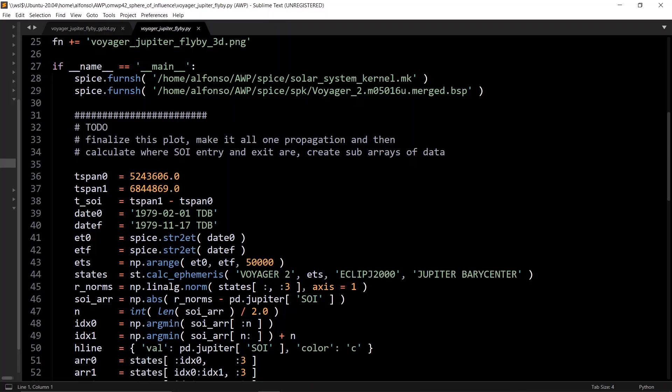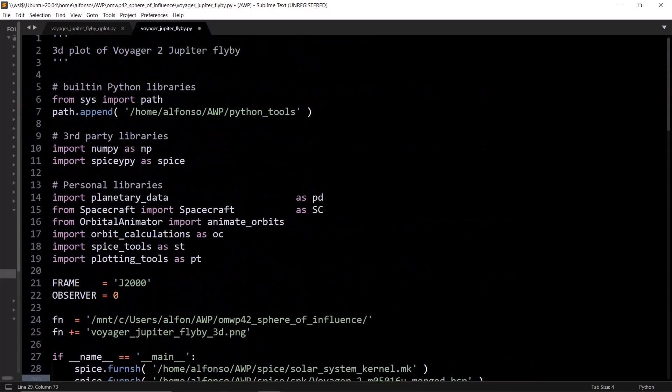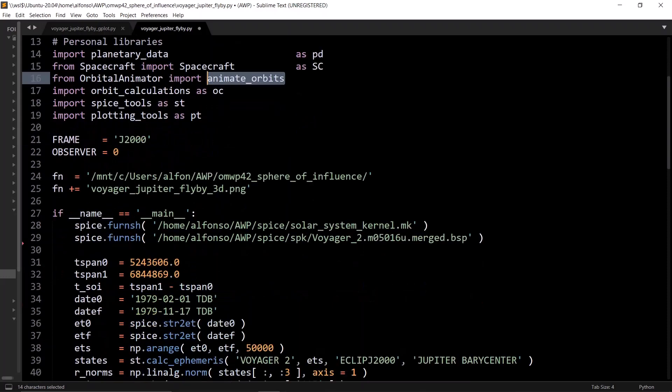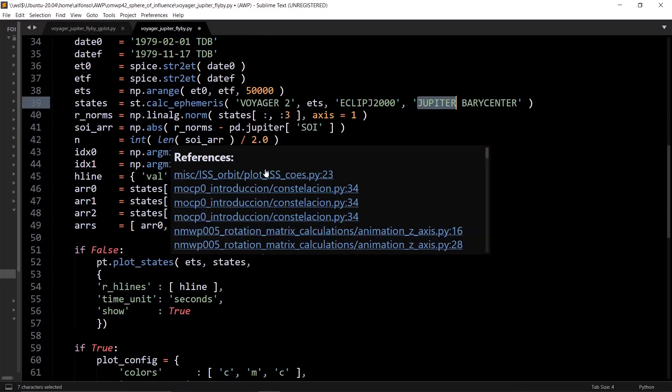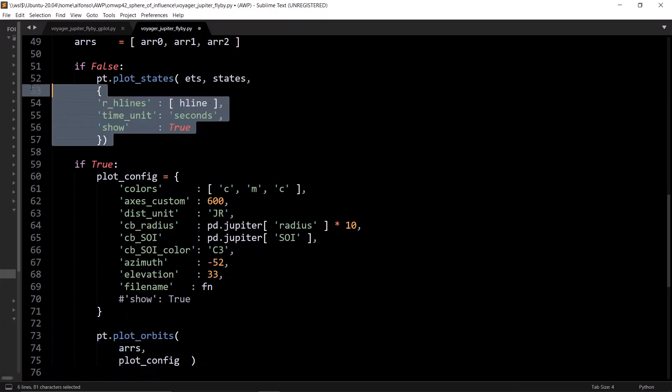It's pretty much the same thing for doing the 3D plots. Same thing with the 3D plots, in this case you want to import the spacecraft. I did animate orbits, but you don't have to do that, obviously. Orbit calculation, spice tools. Basically, it's all the same thing. Just define some initial time, some final time, create an array of those ephemeris times. Calculate all the ephemeris for Voyager 2 with respect to the Jupiter barycenter. Create a norm of all the Rs, sphere of influence, all that good stuff. And then just pass it into the plot orbits function.